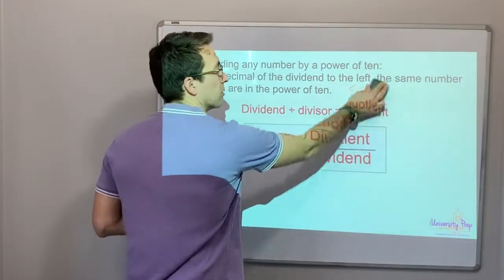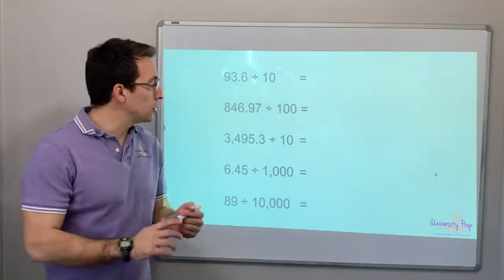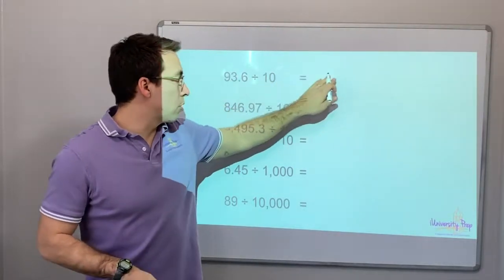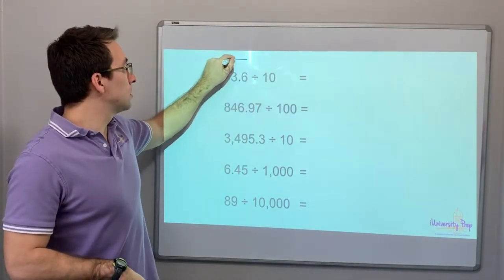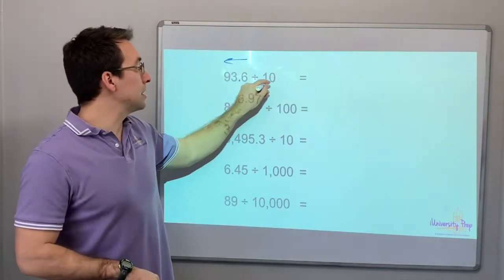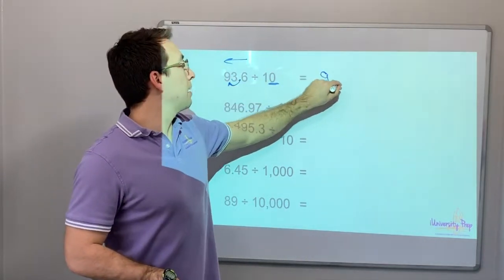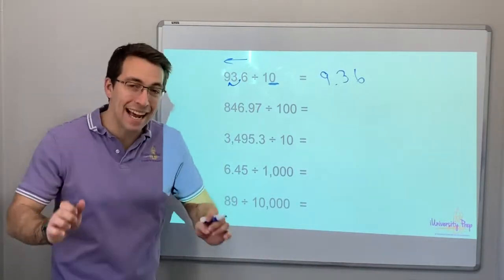Switch the marker. That red was not working. All right. So dividend divided by divisor equals quotient. We just move the decimal to the left. How many zeros? One zero. We move it one place. 9.36. That's it. It is that simple.